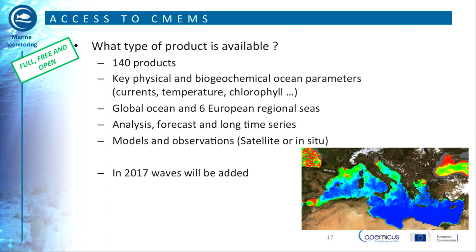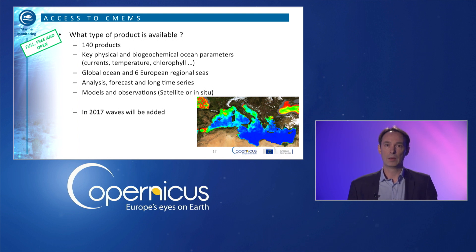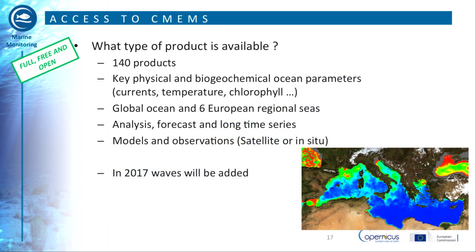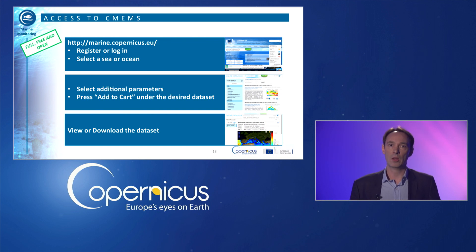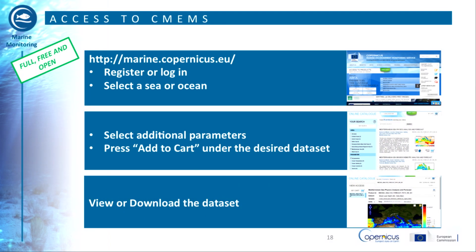CMEMS is the short name for the Copernicus Marine Environment Monitoring Service. It provides full, free and open access to data and information related to global oceans and six regional seas. The products available are near real-time products, multi-year products, in-situ observations and forecasts. Using information from both satellite and in-situ observations, it provides state-of-the-art analyses and forecasts daily, offering an unprecedented capability to observe, understand and anticipate marine environment events. The CMEMS website is the one-stop shop for ocean information. Registration is required to download the data, but search and viewing are not. The website works like any e-commerce site with an add-to-cart button — unlike e-commerce, you do not have to pay for it.